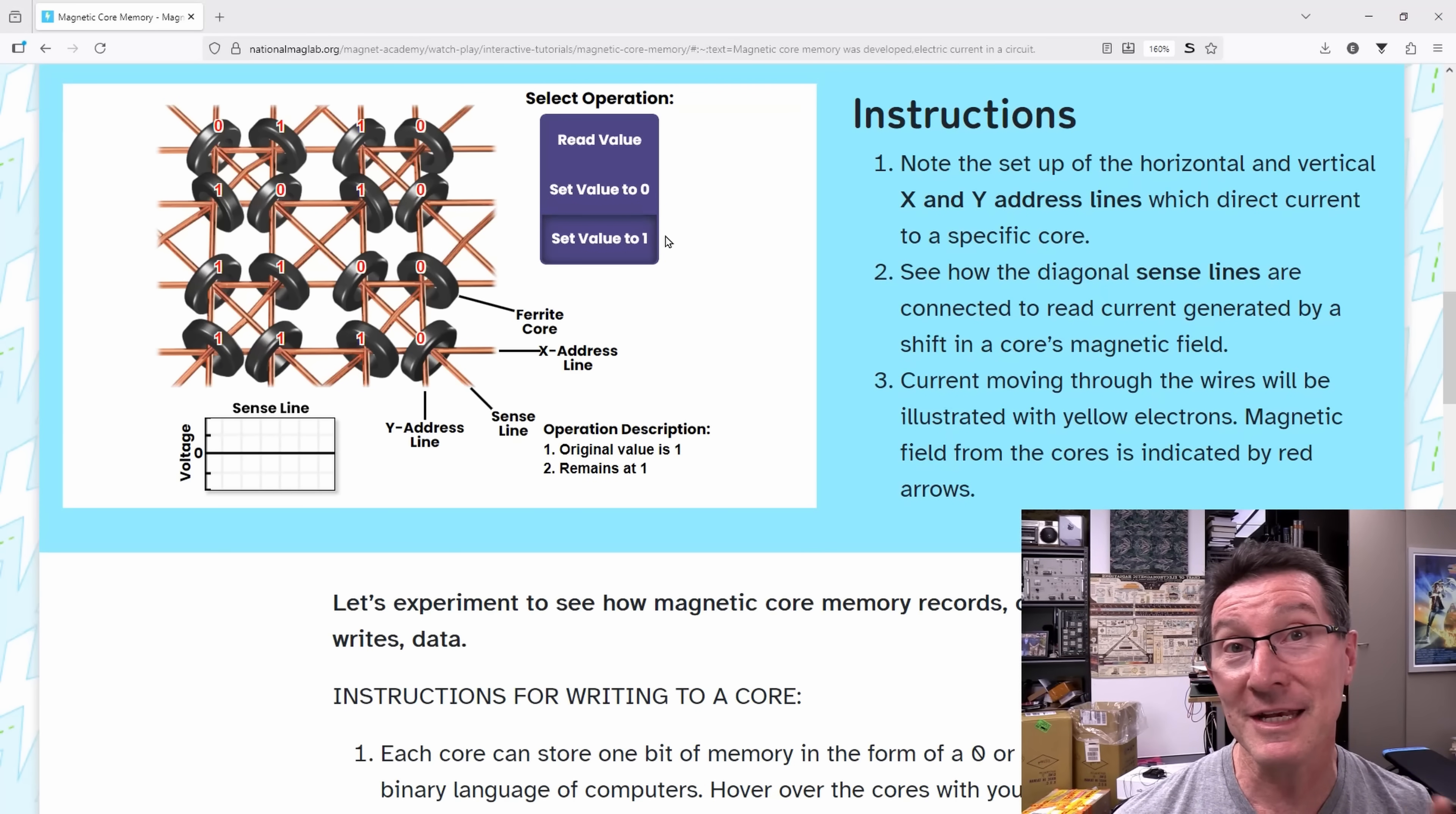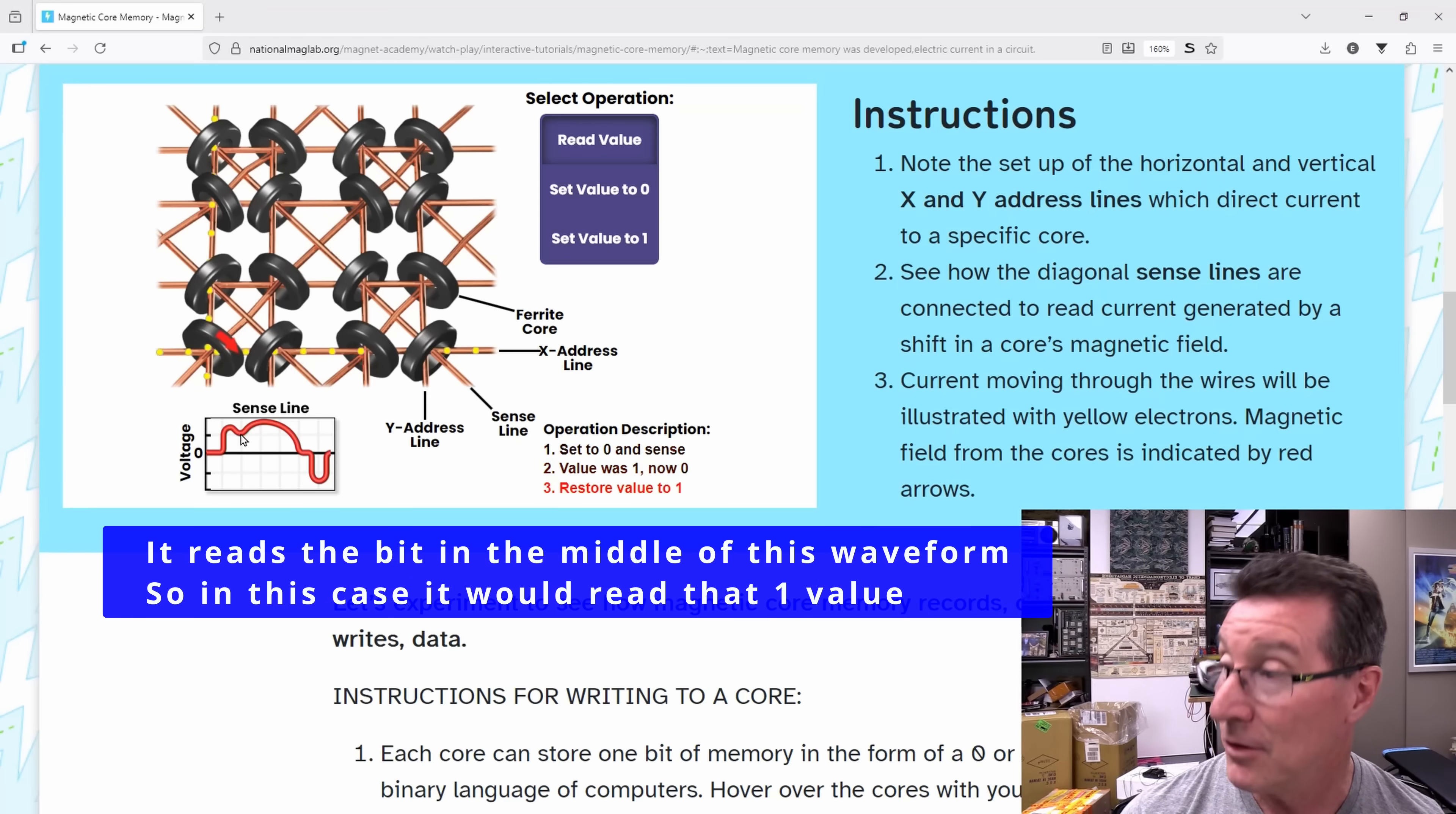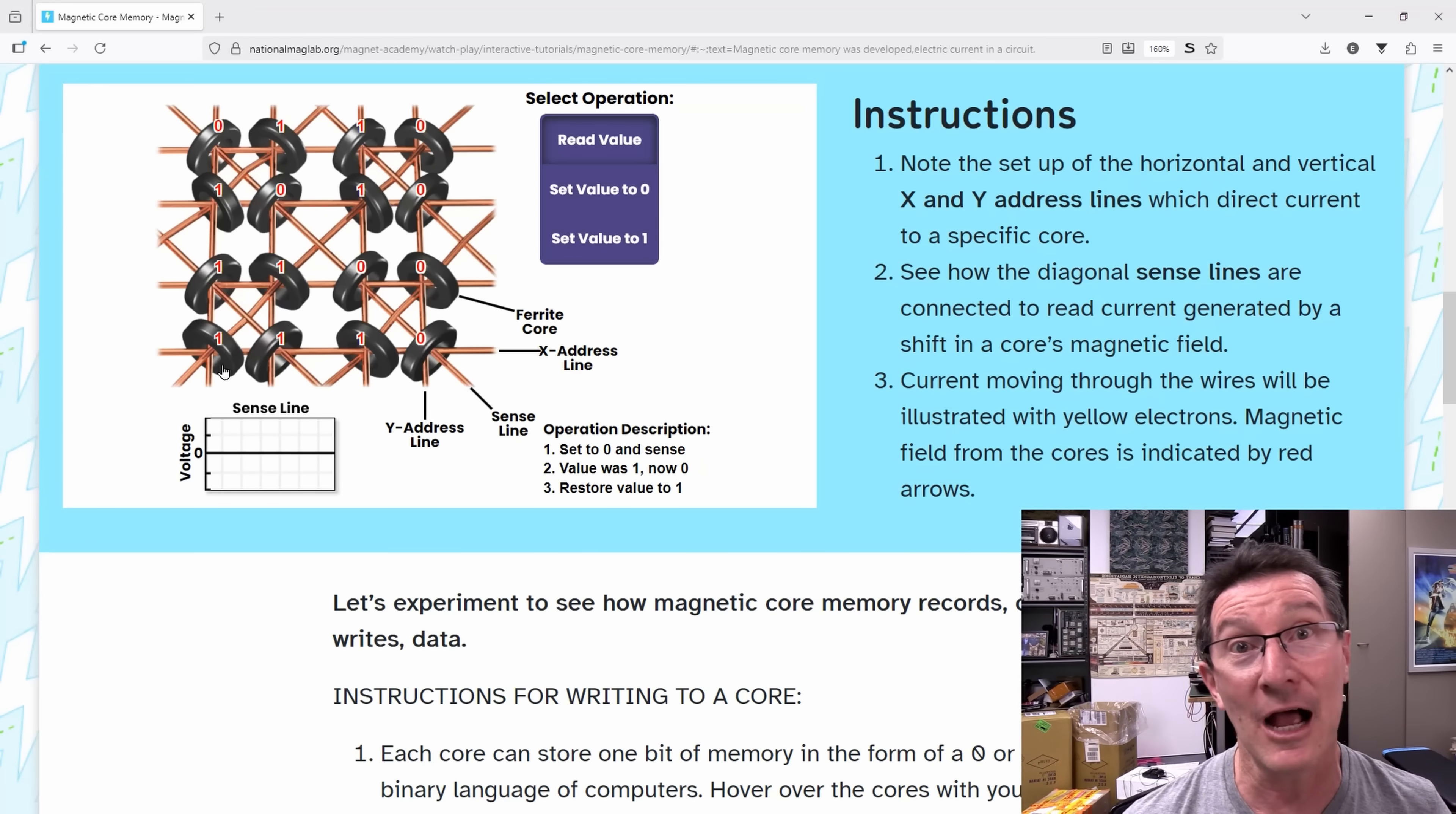So what we're going to do now is read a value. We'll do the bottom left one again here. We've got a waveform of the sense line here with zero volts in the middle. If we're getting a positive voltage on the sense line, it'll go up. If we get a negative voltage, it'll go down. Let's see what waveform we get when we read back a value of 1. Remember when I said this is destructive memory? So we're going to actually kill that bit and we have to write it back. But if we've got a 1 in there, let's read it. Boom! It goes up like that.